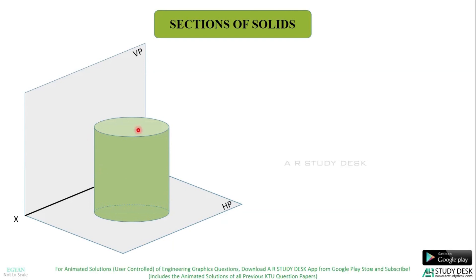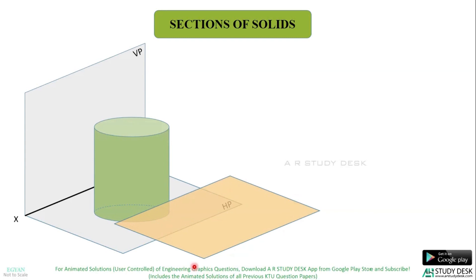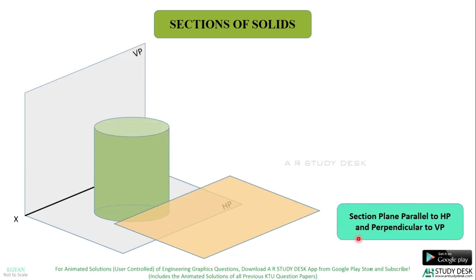Consider a cylinder which is resting on HP on its circular base in the first quadrant. Now this is a section plane which is parallel to HP and perpendicular to VP. You can see that this section plane is parallel to HP. If I extend this section plane, the angle made by VP and this section plane will be 90 degrees. So that is why it is parallel to HP and perpendicular to VP. Now let us see what happens to this solid if I cut using this section plane.